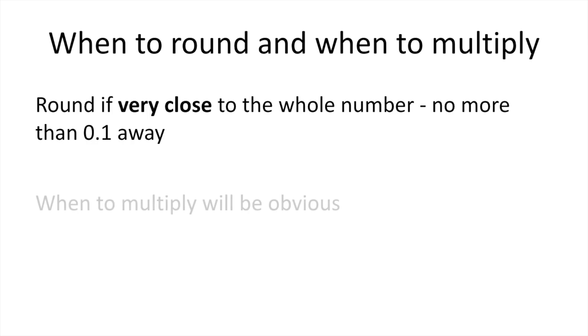When do you multiply out? It's going to be obvious. If it's something 0.25, you'd multiply out by 4 to get the whole number. If it's something 0.33, you multiply by 3. And if it's something 0.5 like we had in the last example, you multiply out by 2.